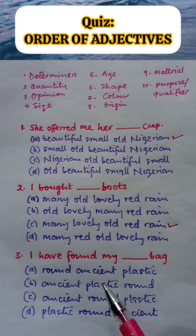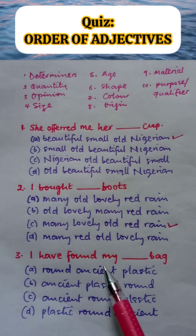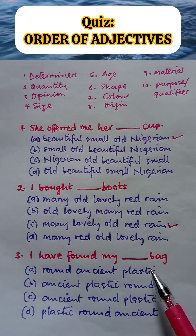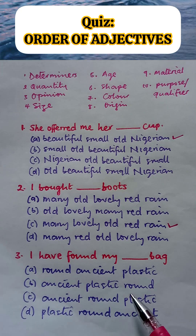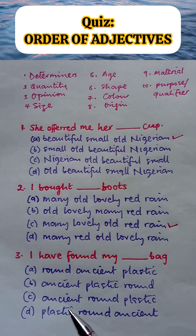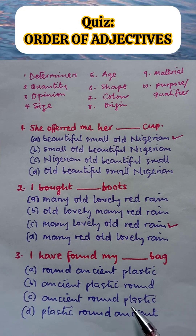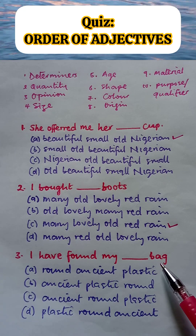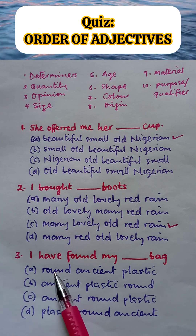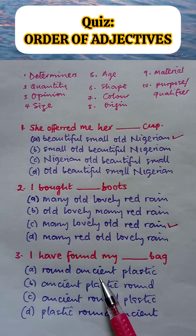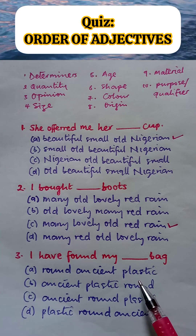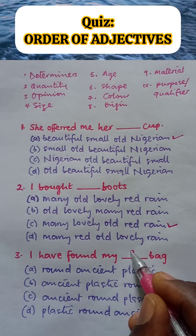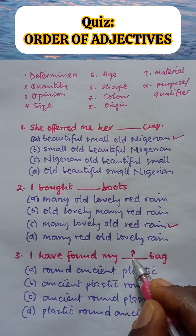Let's look at question 3. Here we have the words: round, which is shape; ancient, which is age; and plastic, which is material. Looking at this, which is the correct option? Try it and put your answer in the comment section. Thank you.